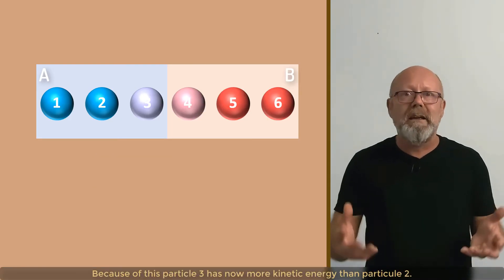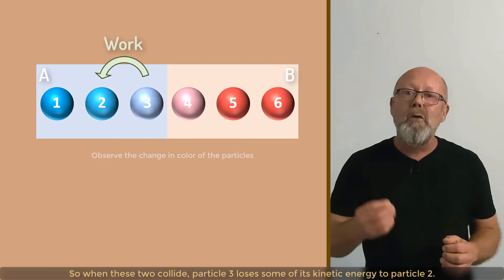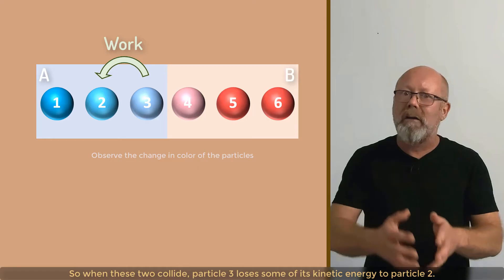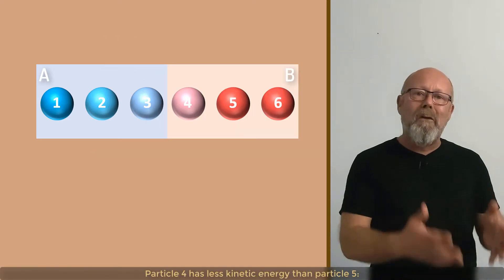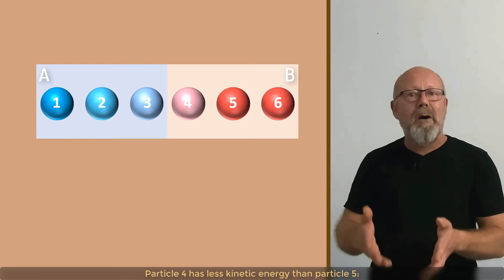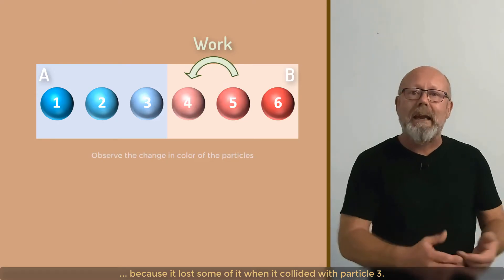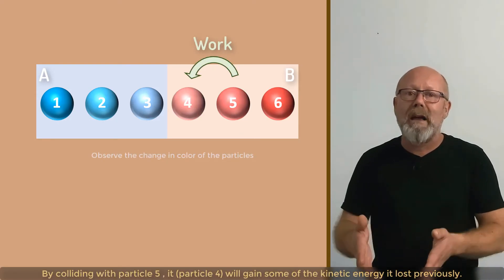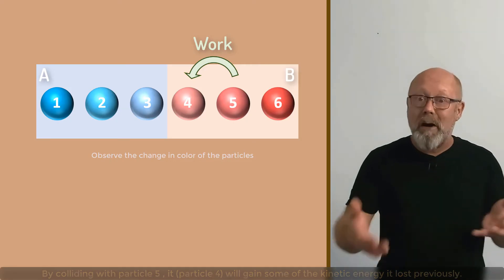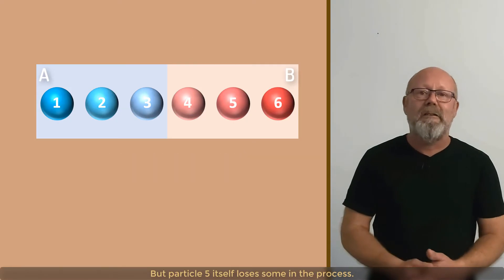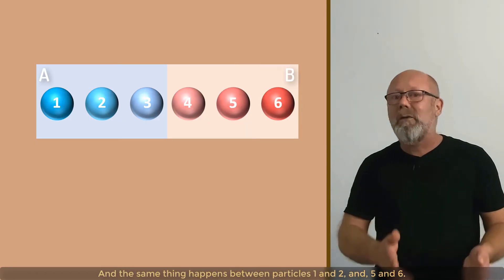Because of this, particle 3 has now more kinetic energy than particle 2. So, when these two collide, particle 3 loses some of its kinetic energy to particle 2. And the same phenomena occurs on the other side. Particle 4 has less kinetic energy than particle 5, because it lost some of it when it collided with particle 3. By colliding with particle 5, it will gain some of the kinetic energy it lost previously. But particle 5 itself loses some in the process.